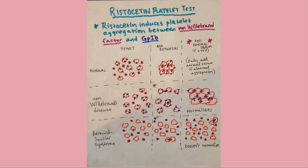The ristocetin platelet test, also known as the ristocetin cofactor assay, works by having ristocetin encourage platelet adhesion — though it's called aggregation in vitro, it's actually testing adhesion. What we are checking is the interaction between Von Willebrand factor and GP1b. Normally, we take the blood, add ristocetin, and get aggregation. If either Von Willebrand factor or GP1b is defective, the test will be abnormal.